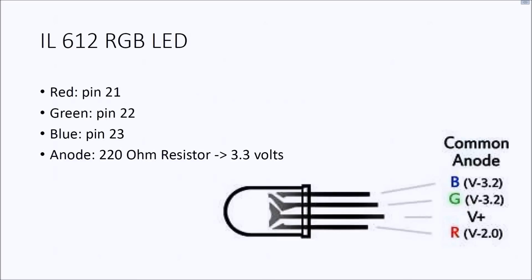In our second example we use an IL612 RGB LED. This is a regular LED but with three color-generating elements: blue, red, and green channels, so we can generate RGB colors. It has a common anode, meaning one pin receives voltage while the other three pins connect to microcontroller pins, where we create duty cycles to pass voltage through each LED element and down to ground.